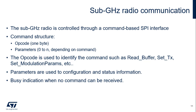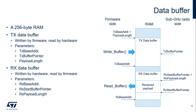Communication with the sub-Gigahertz radio is done through the command-based serial peripheral interface, or SPI. The command structure uses a one-byte opcode to identify the command, followed by the command parameters; the number of parameters depends on the command. A busy signal is provided that indicates when the sub-Gigahertz radio cannot receive commands, such as when the current requested command is being processed or when a low power mode is entered.